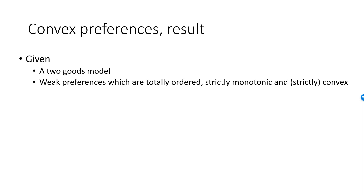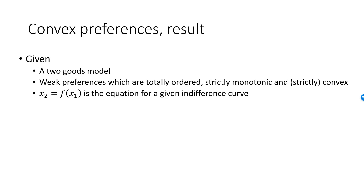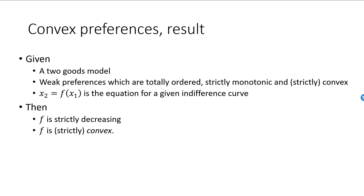Some important results follow if preferences are convex. In the two-goods model, with weak preferences that are totally ordered and strictly monotonic, a given indifference curve is the graph of a function x2 = f(x1). From strict monotonicity, we know that f is strictly decreasing. If preferences are convex, then f will be a convex function. If preferences are strictly convex, then f will be a strictly convex function. There is no mystery here — the way we have defined convex and strictly convex preferences is exactly how convexity and strict convexity of a function are defined.